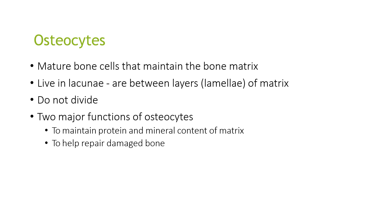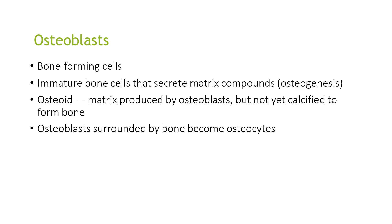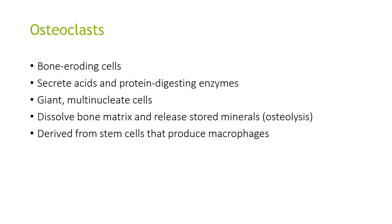Osteocytes are mature bone cells that maintain the bone matrix. They live in lacunae, under a layer between the lamellae or matrix, and they do not divide. Two major functions of osteocytes are to maintain the protein and mineral content of the matrix and to help repair damaged bone. Osteoblasts are immature bone-forming cells that secrete matrix compounds in a process known as osteogenesis. The osteoid is a matrix produced by osteoblasts but not yet calcified to form bone; osteoblasts surrounded by bone become osteocytes. Osteoclasts are bone-eroding cells that secrete acids and protein-digesting enzymes. They are giant multinucleate cells that dissolve bone matrix and release stored minerals through osteolysis, and are derived from stem cells that produce macrophages.